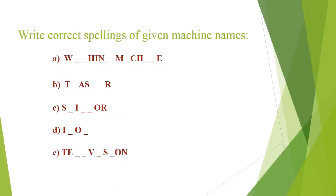Now, write the correct spelling of the given machine names. We have some spellings with missing words. It has the name of the machine. First, we have the spelling of the missing word: M-A-C-H-I-N-E — Washing Machine. Very good. And number B is Toaster. Very good.